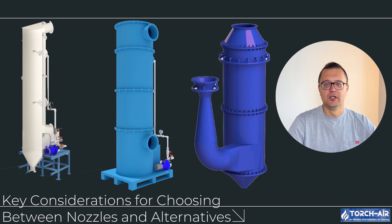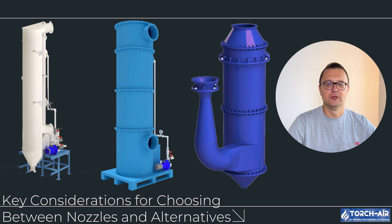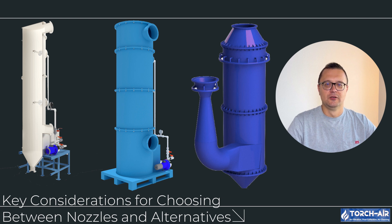Key considerations for choosing between nozzles and alternatives: selecting the right method depends on several factors. Type of contaminant: fine particulates and gases usually require nozzles to atomize the liquid and maximize gas-liquid interaction; for larger particulates or basic gas scrubbing, water overflows or trays might be more effective. Flow rate: high gas flow rates might benefit from simpler methods like overflows or liquid seals, while lower flow rates with complex contaminants often need nozzle systems for precision. Maintenance: nozzles can clog, especially when handling dirty liquids or particulates, so where maintenance needs to be minimized, trays or overflows may be better suited. Energy consumption: nozzles require pumps and pressure systems which increase energy costs, while water overflows and trays are less energy-intensive but may not provide the same scrubbing efficiency for finer contaminants.